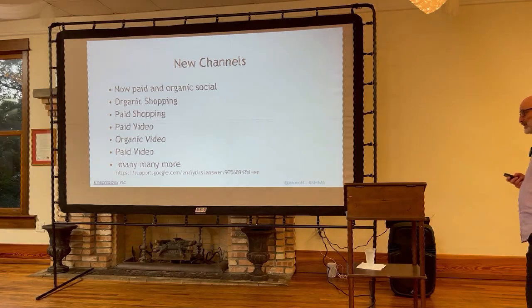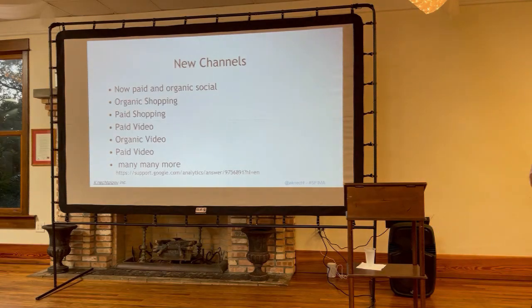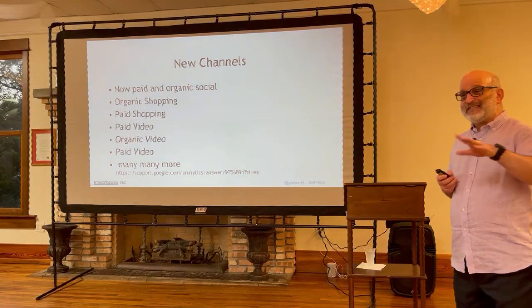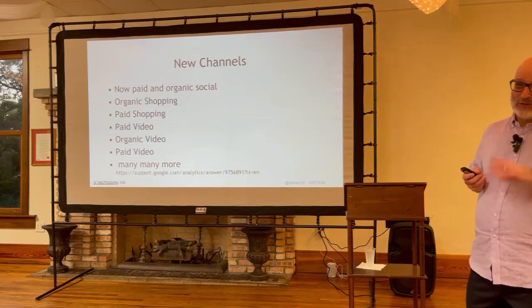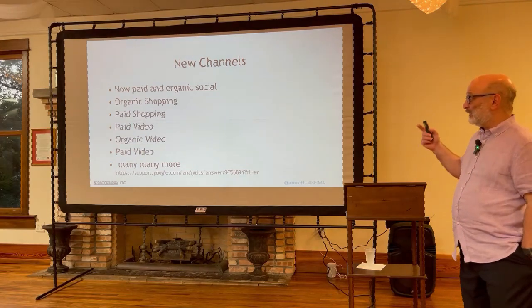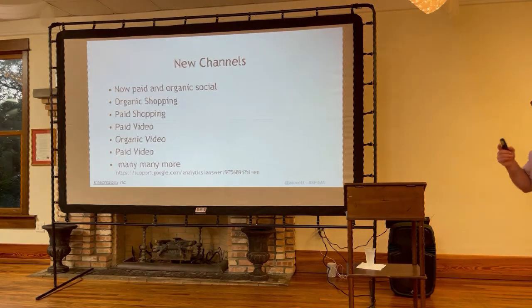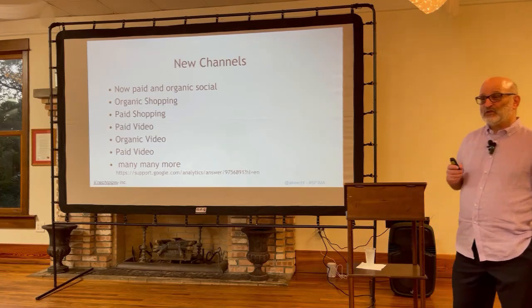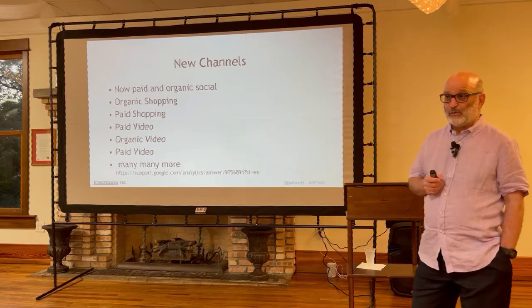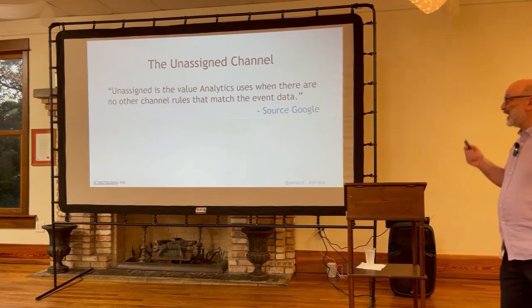Some of the new channels I'm running into: paid and organic social. In Universal Analytics I spent a lot of time creating custom channels to separate out paid social, because if you used CPC as your medium it came in as paid search and drove everyone doing Facebook ads nuts — because it wasn't search. They've now also added paid versus organic shopping, paid versus organic video, and a whole bunch more. You can see the full list and what UTM codes you need to get traffic categorized accordingly.